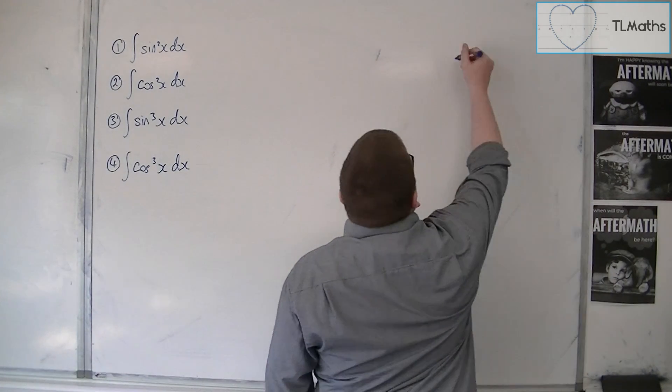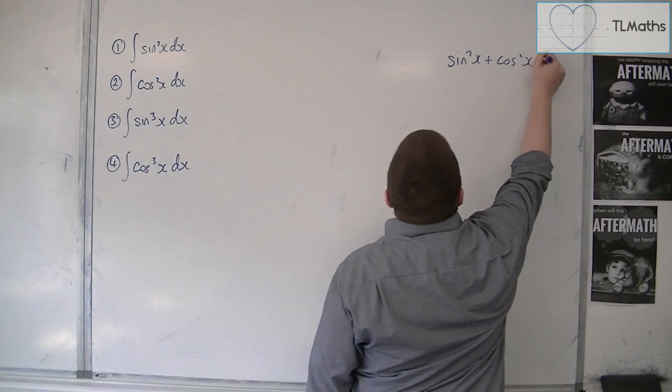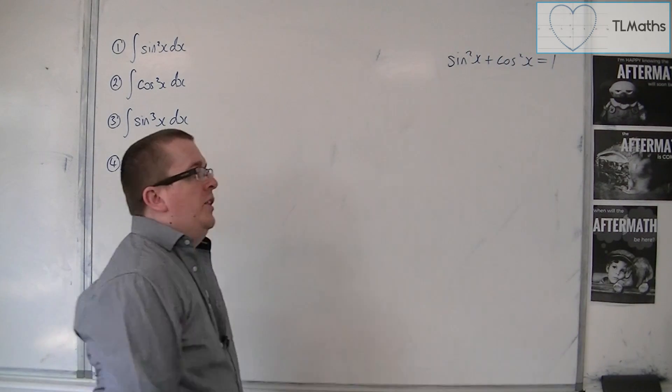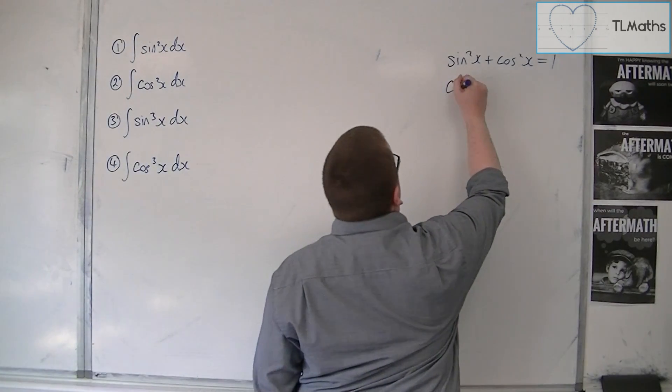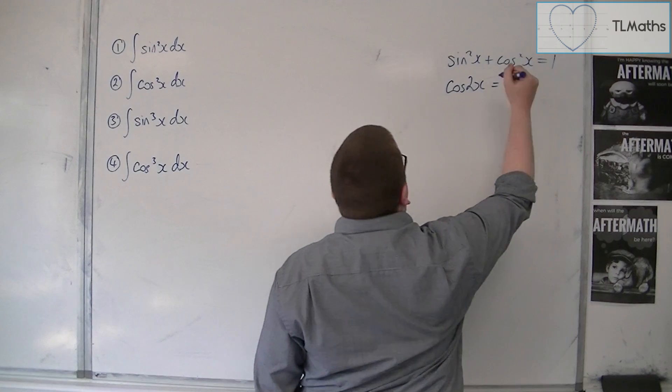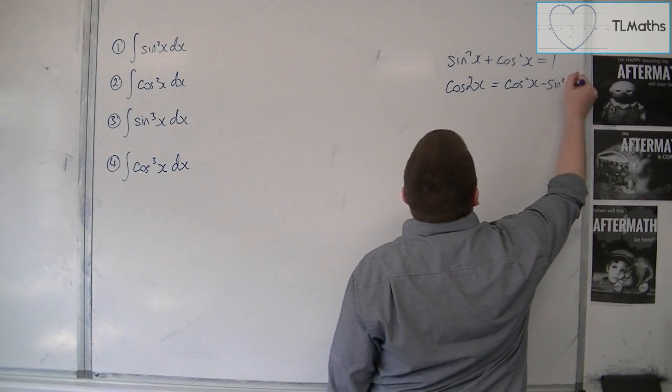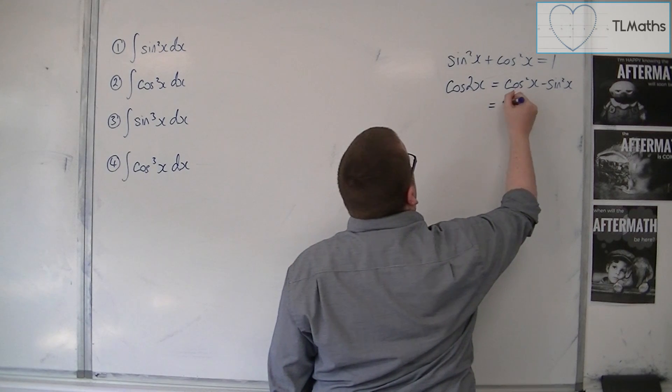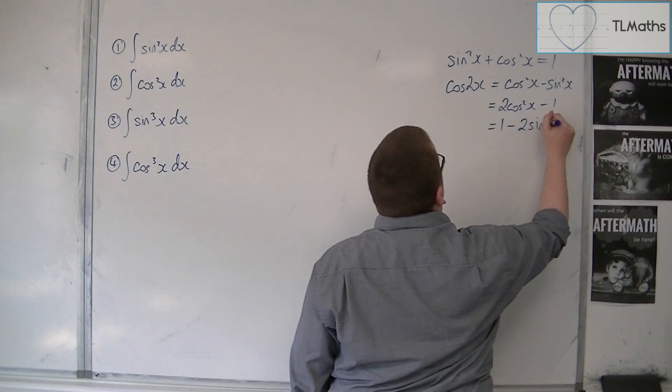So there's the obvious one, sine squared plus cos squared is 1. But there's also that cos2x identity. Because cos2x, remember, is cos squared minus sine squared. And that can become either 2cos squared minus 1 or 1 minus 2 sine squared.